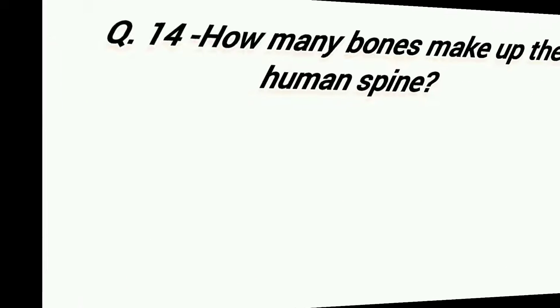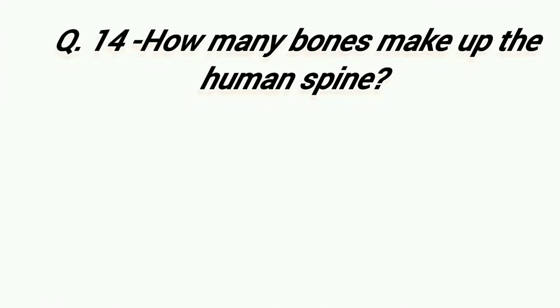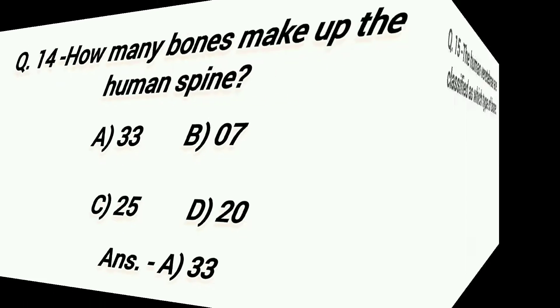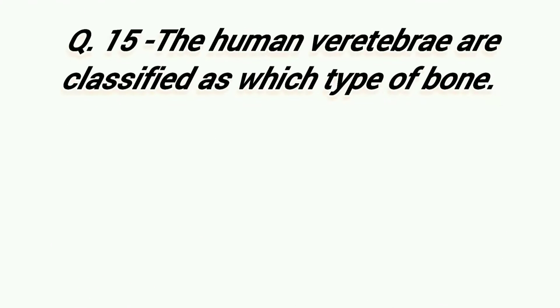How many bones make up the human spine? Option A: 33, Option B: 7, Option C: 25, Option D: 20. Right answer is Option A, 33. The human vertebrae are classified as which type of bone?